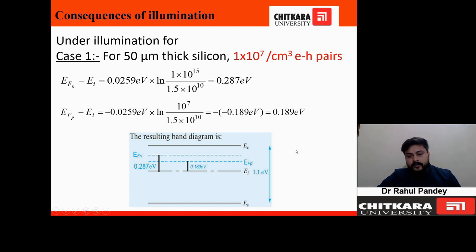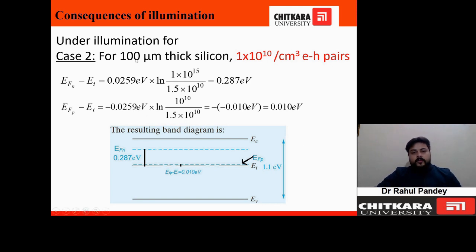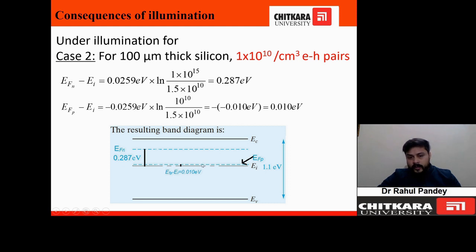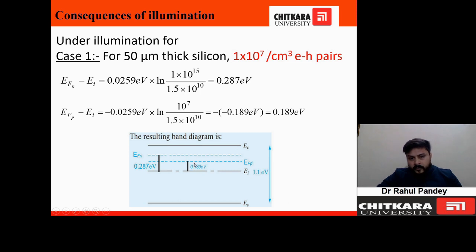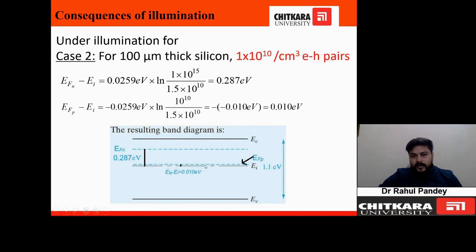Under illumination we observe splitting of the Fermi level — previously one Fermi level, now two. For Case 2 (100 µm wafer), 1×10¹⁰ cm⁻³ electron-hole pairs are generated. This is still small compared to the donor density, so the electron quasi-Fermi level position remains the same. However, substituting the hole concentration, the hole quasi-Fermi level shifts to −0.010 eV relative to E_I — moving significantly closer to E_I compared to the previous case.